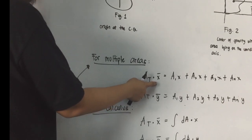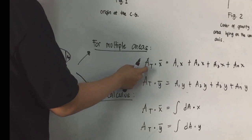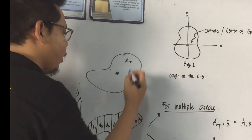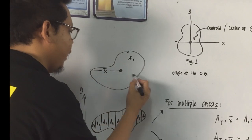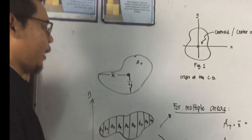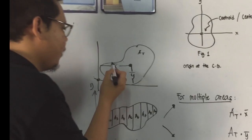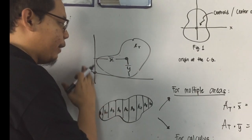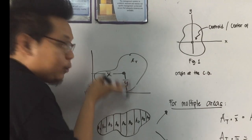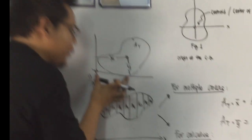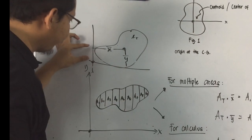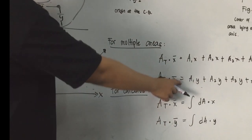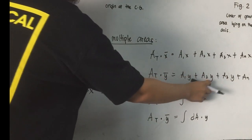When we say bar x, that is the abscissa — the x-value of the center of the total area. From the centroid to the origin, it is bar x. We count x from left to right and y from bottom to top. Bar x is the value from the centroid to the origin, and bar y is the value from the centroid to the origin along the y-axis. We also have: the total area times bar y is equivalent to area 1 times y, plus area 2 times y, plus area 3 times y, and so on. Using calculus, we omit the plus signs and use integration instead.